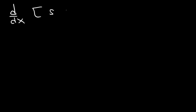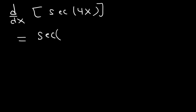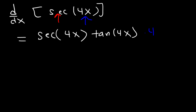Here's another problem. What is the derivative of secant 4x? The derivative of secant 4x is going to be secant tangent — that's the derivative of secant. Now the inside function has to remain the same for both secant and tangent. Next, we need to differentiate 4x, so it's just going to be times 4. And so that's the solution.